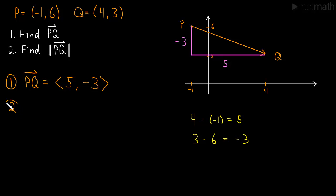And what about the length of PQ? Well, this is just Pythagorean theorem. Remember the length is just the length of this hypotenuse here. I'll write it in like this. It's the length of this arrow, which is the hypotenuse of this right triangle.